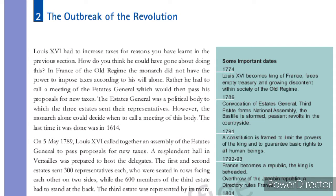To pass the proposal, the king had to call a meeting known as the Estates General. The Estates General is a political body to which the three estates sent their representatives. The three estates are: first, the Clergy; second, the Nobility; and third, the Peasants. These three estates would send their representatives to comprise the Estates General. The monarch alone had the power to decide about the meetings — the last time it was done was in 1614.